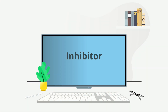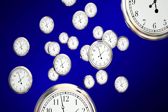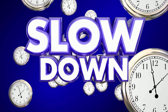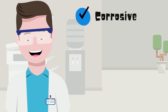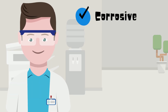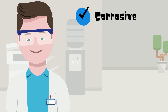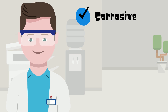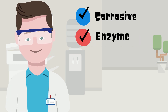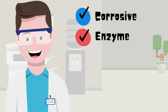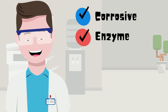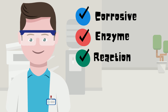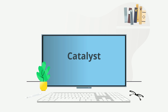An inhibitor is a substance that slows down the rate of reaction. There are generally three common types of inhibitors: a corrosive inhibitor, which decreases the rate of the oxidation of metal; an enzyme inhibitor, which in chemistry and biology binds to an enzyme, lessening its activity; and a reaction inhibitor, which is any substance that decreases the rate of a chemical reaction.